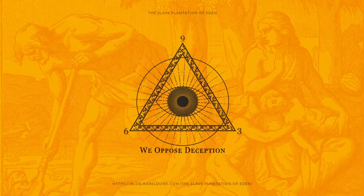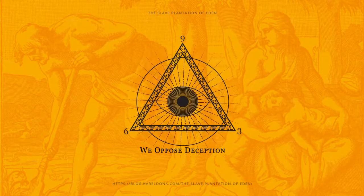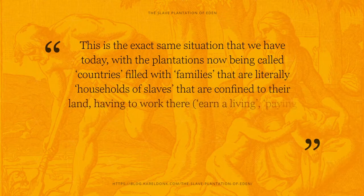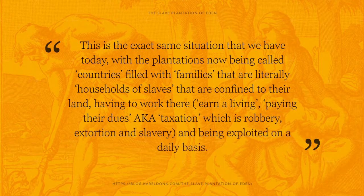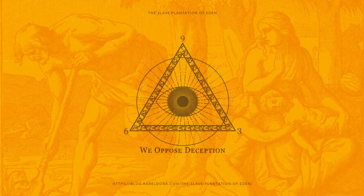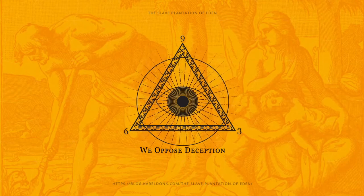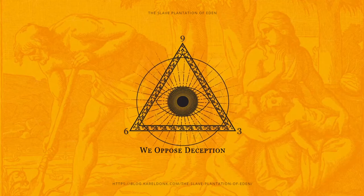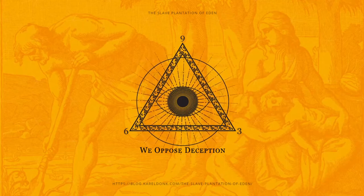This is the exact same situation that we have today, with the plantations now being called countries, filled with families that are literally households of slaves that are confined to their land, having to work there, earn a living, paying their dues, aka taxation — which is robbery, extortion, and slavery — and being exploited on a daily basis. And just like how the Garden of Eden was a slave plantation that was sold to the slaves as being a garden or paradise, a place so ideal and beautiful that it was a true privilege to live there, so too are the slaves of today being brainwashed to be patriotic, to love and serve their plantations, aka countries, and to actually desire and defend their own enslavement.